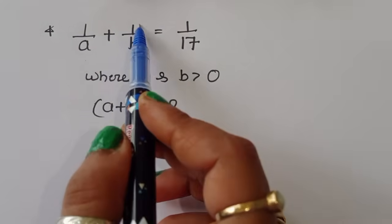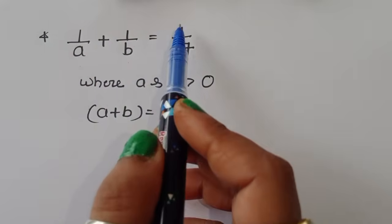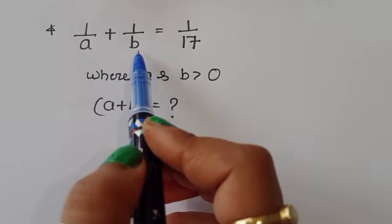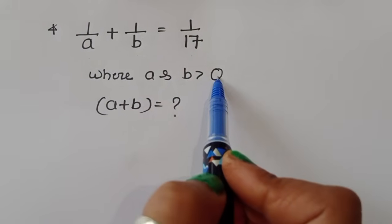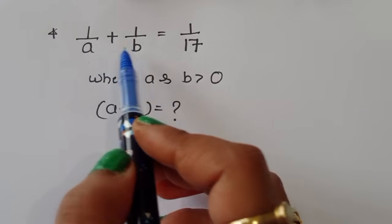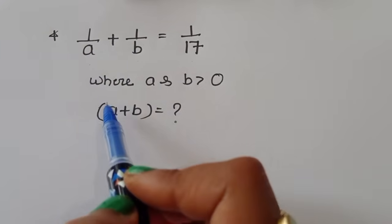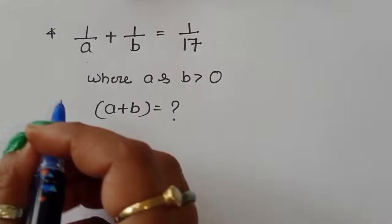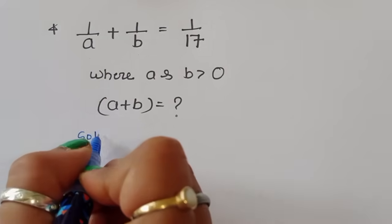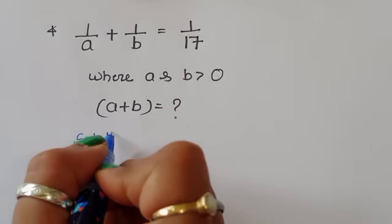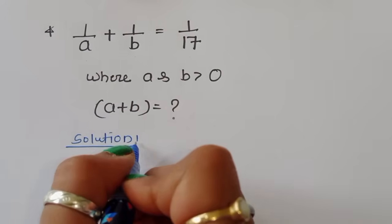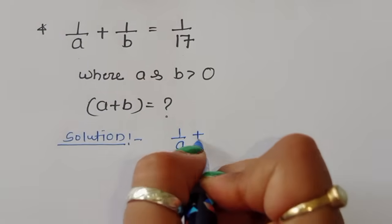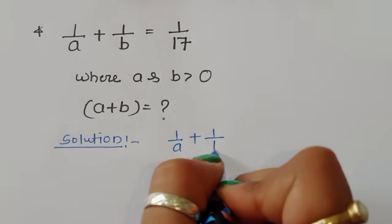We are given 1/a + 1/b = 1/17, where a and b are greater than 0. We have to find the value of a and b, and also find the value of a + b. Let's see how we can find the solution.